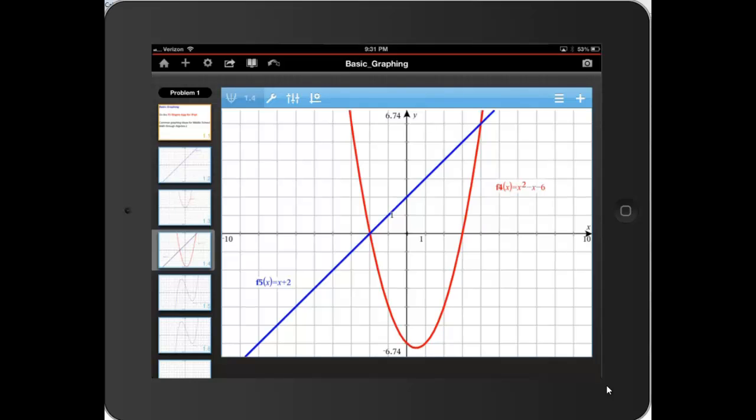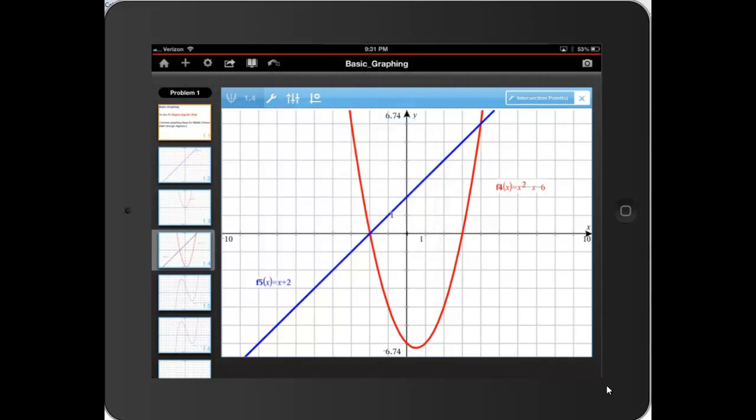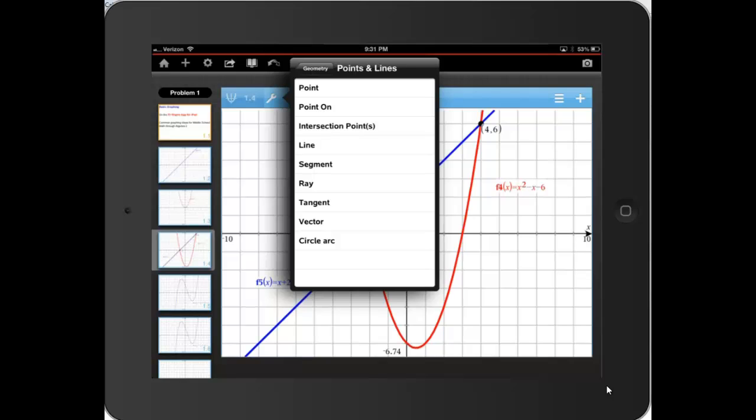Here I've already graphed a linear equation and a parabola. I'd like to find the points of intersection so I can press the little tools. Go to geometry, points and lines, and intersection points. I'll tap on one curve, tap on the other, and there are the two points of intersection.